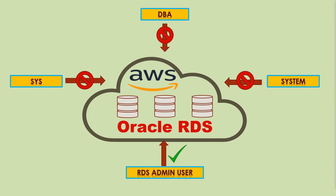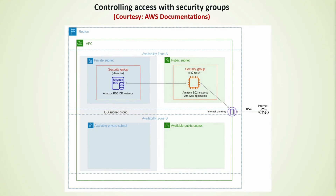I also assume that your organization's network security policies, firewall rules, etc., have already been established along with your AWS account to allow traffic between AWS and your organization's network. Normally as a DBA you don't have to take care of setting up the VPC, virtual private cloud, security groups, or private/public subnets. I assume all this setup has already been completed by other teams like network security.